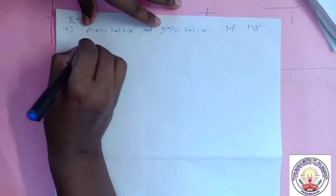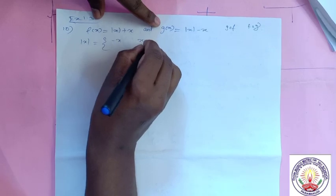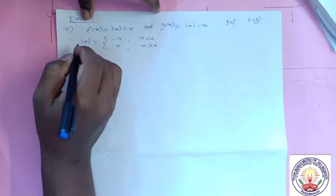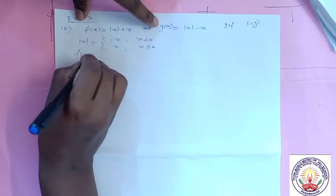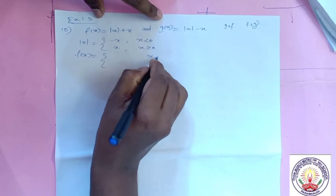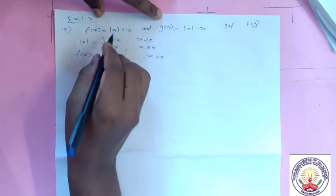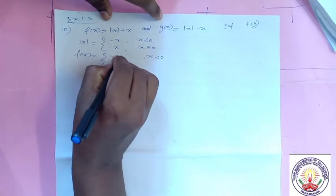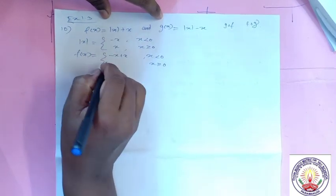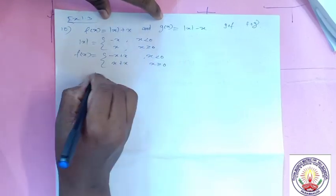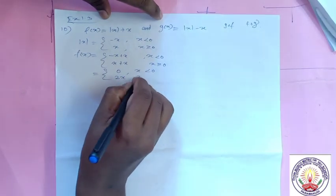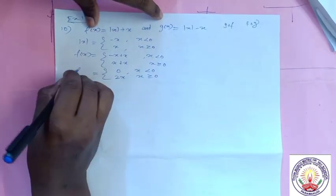We know modulus of x: minus x when x < 0, and x when x ≥ 0. So we rewrite f(x) in two cases. When x < 0: |x| = -x, so f(x) = -x + x = 0. When x ≥ 0: |x| = x, so f(x) = x + x = 2x. So f(x) = 0 when x < 0, and 2x when x ≥ 0.